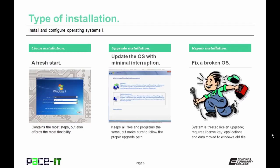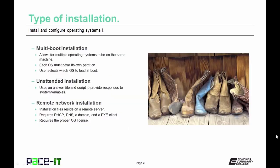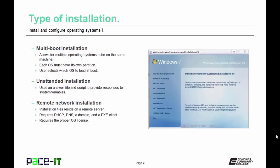Then there's the repair installation, used to fix a broken operating system. The system is treated like an upgrade and requires the license key; applications and data are moved to the windows.old file. There is also multi-boot installation, allowing multiple operating systems on the same machine — each OS must have its own partition, and the user selects which to load at boot. There's also an unattended installation where the technician uses a special script file to provide responses to system variables. The remote network installation requires a DHCP server, a DNS server, a domain, and a PXE (pre-execution environment) client, plus the proper OS license.